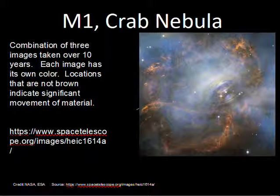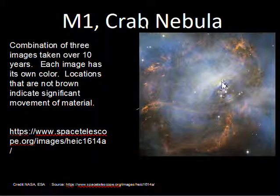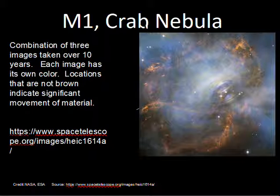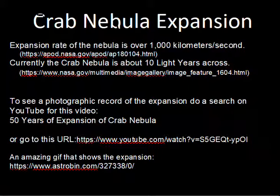In this image, three images are being combined, each with a different color, over a total span of 10 years. The brownish area is where there has not been a lot of motion of the material. Closer in, where it's more like a rainbow, that reveals the material moved from one time to another. There's more activity towards the center, and the material is moving roughly a little over a thousand kilometers per second. There's an Astronomy Picture of the Day website with more information on this.